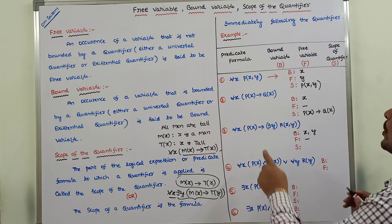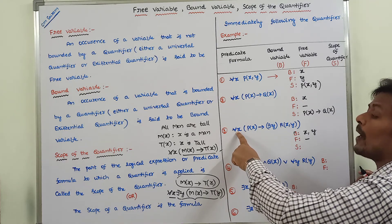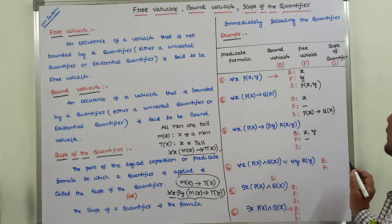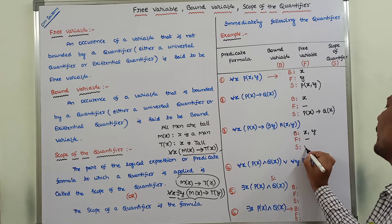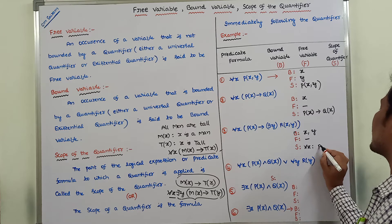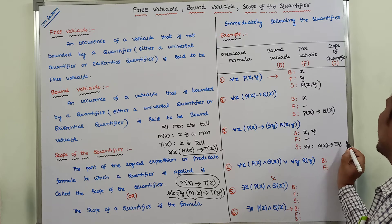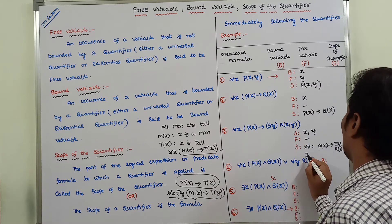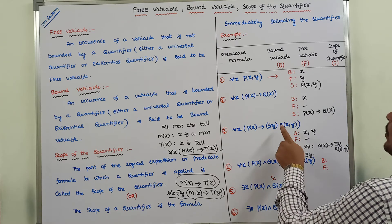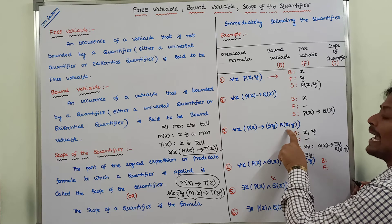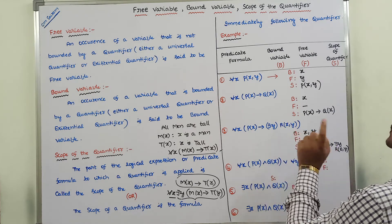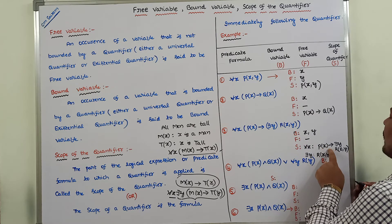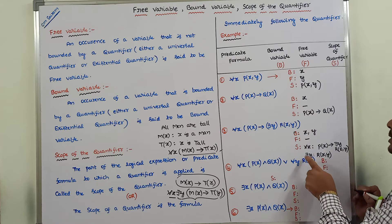For the scope of the quantifier: for all x, the scope is the predicate formula immediately following the universal quantifier. There are two scopes here. The scope of for all x is P(x) → there exists y R(x, y). The scope of there exists y — the existential quantifier — is R(x, y). There is no free variable.